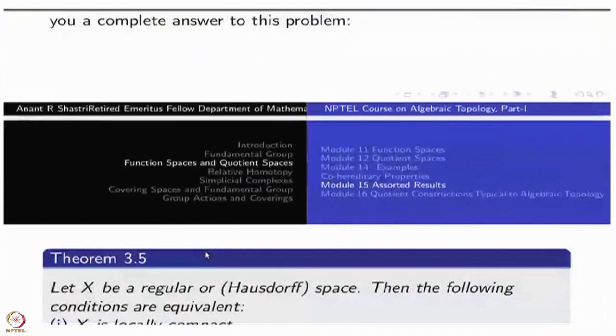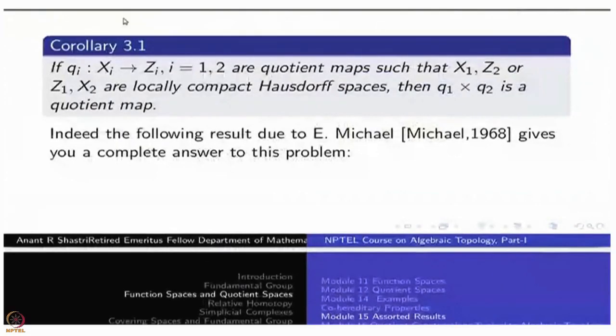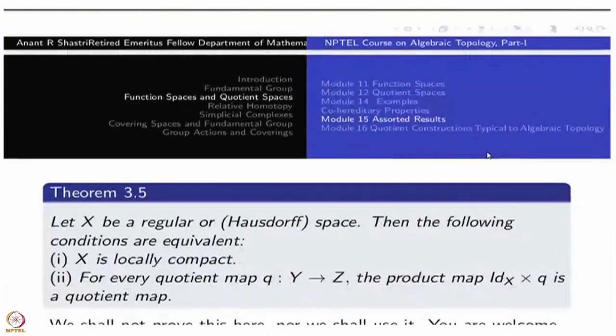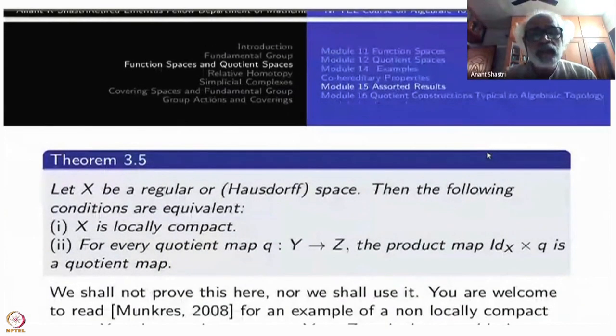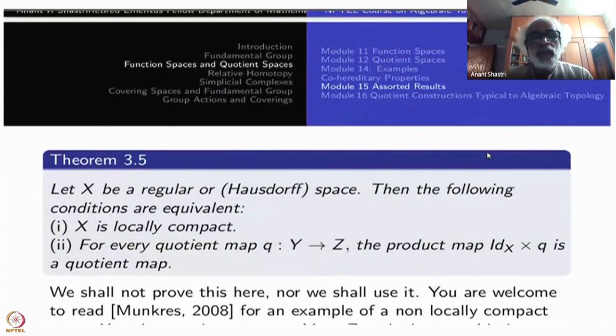So it gives you a complete answer to this problem. Namely, I will state it here. This statement, whatever I give, may not be exactly as it is here because that is a paper. It will write many other things. So I have extracted something. Let X be a regular or Hausdorff space. Then the following 2 conditions are equivalent. Namely, X is locally compact. Namely, X is locally compact plus Hausdorff we have. So every quotient map Y to Z, the product with X, now Y and Z have changed here. Y and X have changed. Identity × Q is a quotient map. So whatever identity affects you take, this X must be locally compact. Then this is, if this is true for all Q, then X must be locally compact. So that is the theorem of Michael.